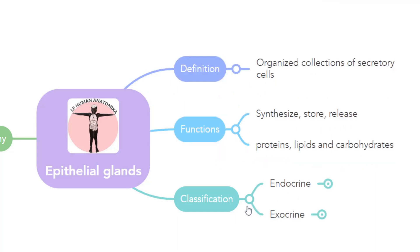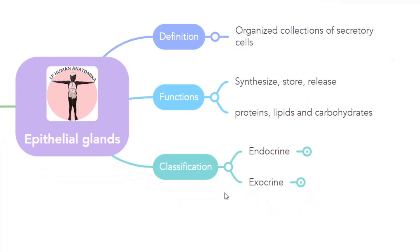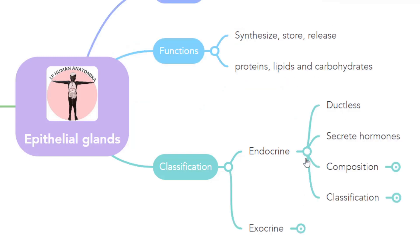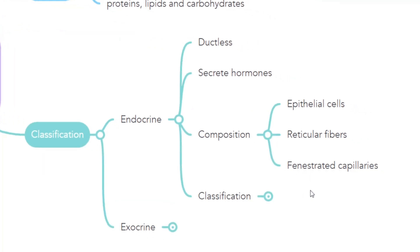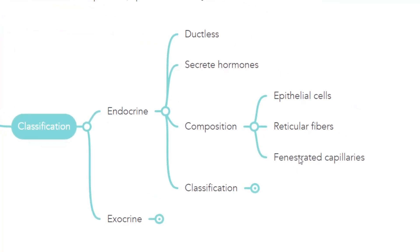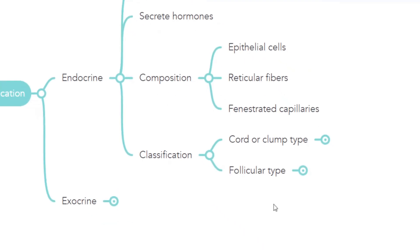Epithelial glands are classified mainly based on duct system into endocrine and exocrine glands. The endocrine glands are ductless glands where the secretory hormones are poured into the surrounding rich capillary network directly. The composition of the endocrine glands is formed by epithelial cells, reticular fibers, and fenestrated capillaries. They are classified into two types: cord or clump type and follicular type.